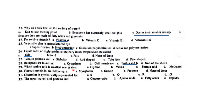Which amino acid is smallest in size? Glycine is the simplest and smallest amino acid because it has hydrogen as its side chain, which is the most important. In the following fibrous proteins, keratin is an example.